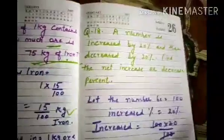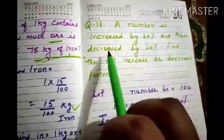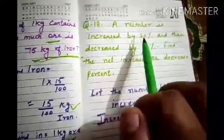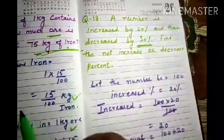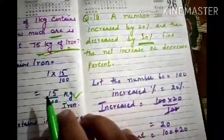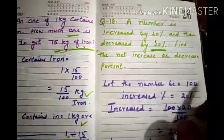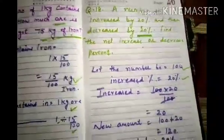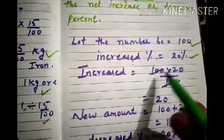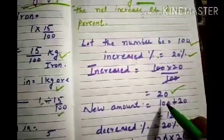Question number 18, a very important question. A number is increased by 20% and then decreased by 20%. Find the net increase or decrease percent. Let the number be 100. First, a 20% increase — the increased value is 100 into 20 by 100, which equals 20.